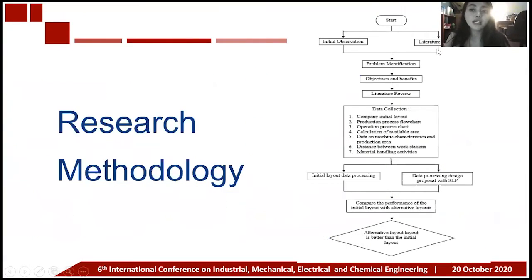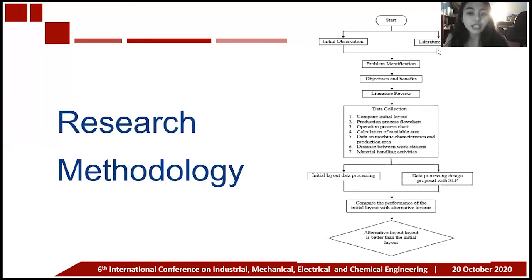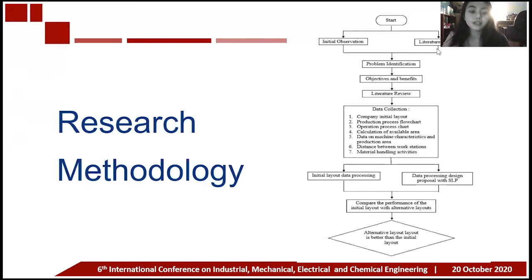The figure shows the research methodology used in this research. First, we do an initial observation and literature review, then problem identification, objectives and benefits, literature review, and data collection. Next is initial layout data processing and data processing design proposal with the systematic layout planning method. Then comes the comparison of the performance of the initial layout with alternative layouts, and the conclusion is whether the alternative layout is better than the initial layout.